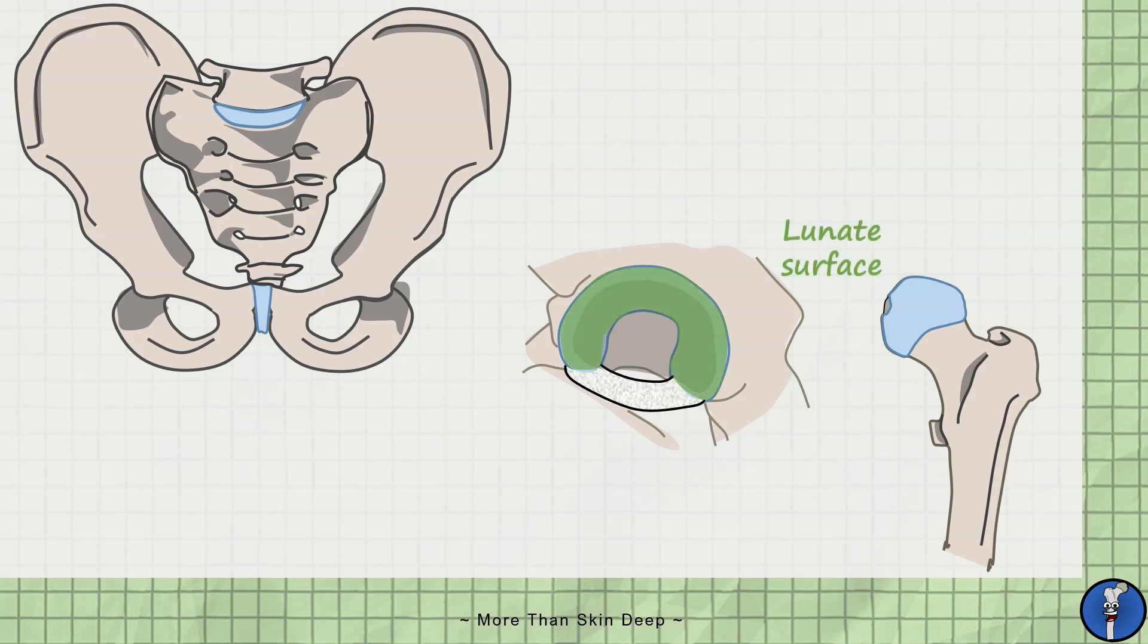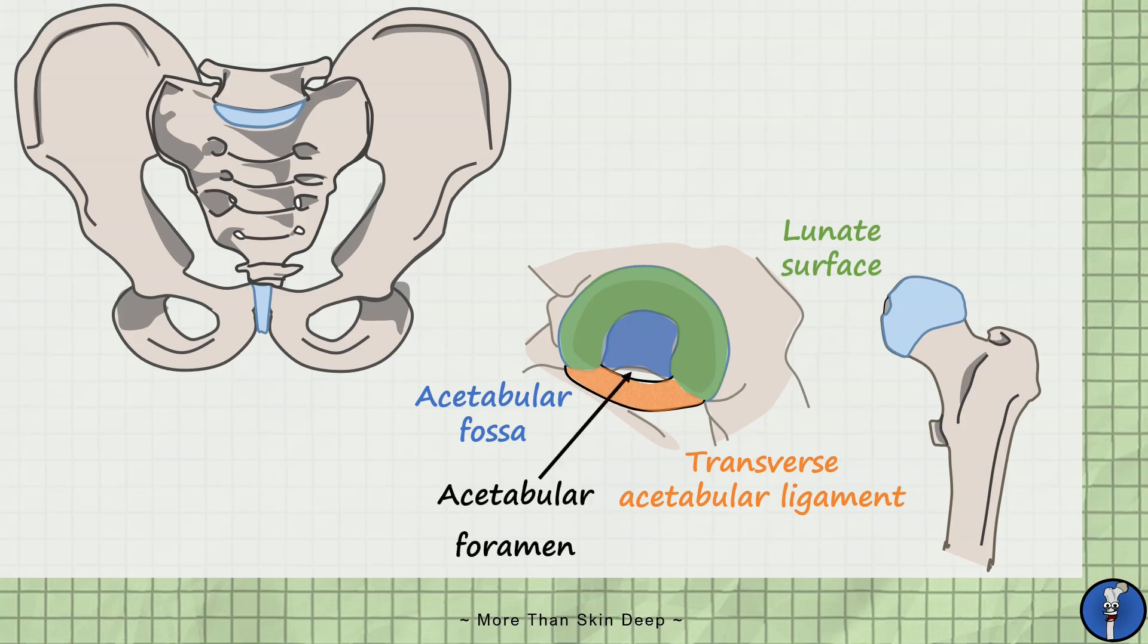Reinforcing the inferior part of the acetabulum is the transverse acetabular ligament. Lastly, the non-articular middle of the acetabulum is known as the acetabular fossa and is not coated by cartilage. There's a small gap in the inferior part of the joint, known as the acetabular foramen, which permits the entry of a small branch of the obturator artery.